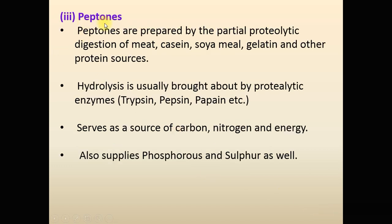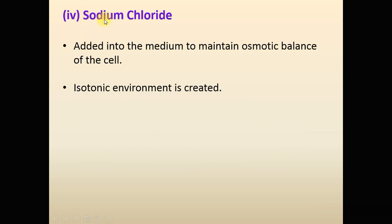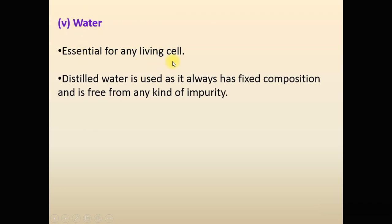The third component is peptone. Peptones are prepared by partial proteolytic digestion of meat, casein, soya meal, gelatin, and other protein sources, usually brought about by proteolytic enzymes like trypsin and pepsin. Peptone serves as a source of carbon, nitrogen, and energy, and also provides phosphorus and sulfur. Sodium chloride is added to maintain the osmotic balance of the cell, providing an isotonic environment. Distilled water is used because it has a fixed composition and is free from impurities.